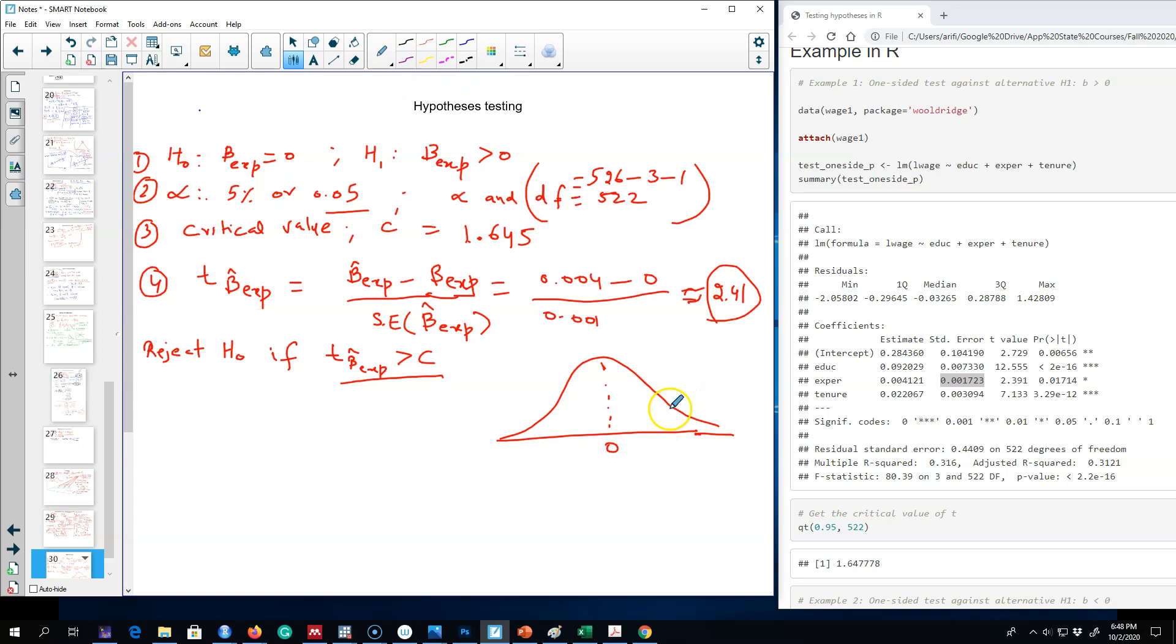Based on the critical value, which is 1.645, this is our rejection region. If our calculated value is greater than the critical value, we're going to reject the null hypothesis. Our calculated value is 2.41, which is greater than 1.645, so we're going to reject H0. We conclude that experience has positive impact on wages—that was our alternative hypothesis.